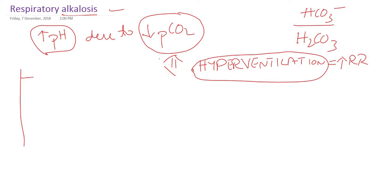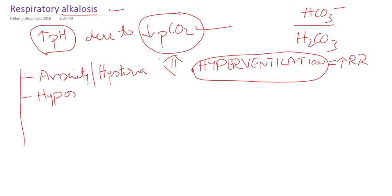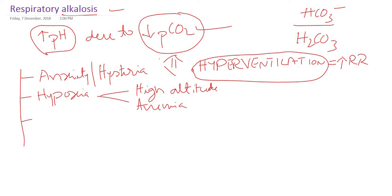In which conditions will we see hyperventilation? First and foremost, anxiety, or we can call it hysteria. In this condition the patient will be breathing very fast, and we will tend to lose more carbon dioxide by hyperventilation. Hypoxia could be due to anemia, high altitude, or even hypoxic anemia. In this condition there will be hyperventilation, and more and more carbon dioxide will be lost, leading to increase in the pH or alkalosis.